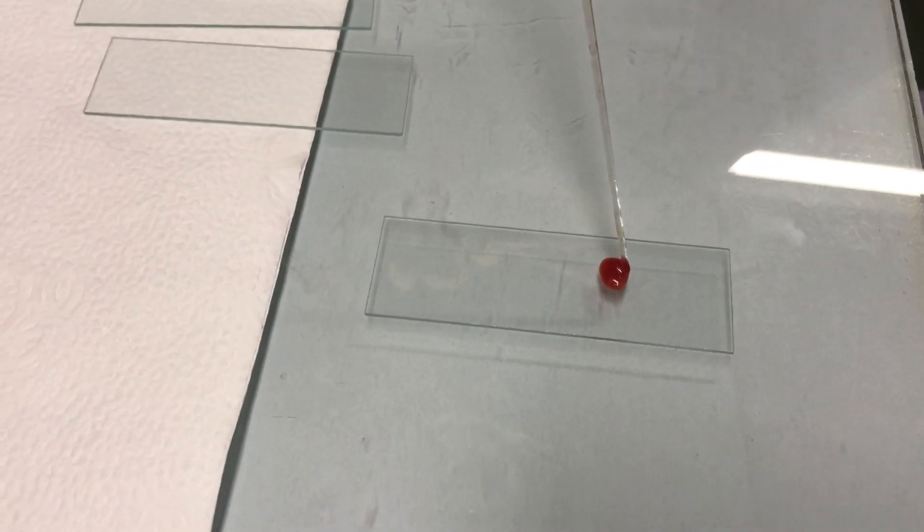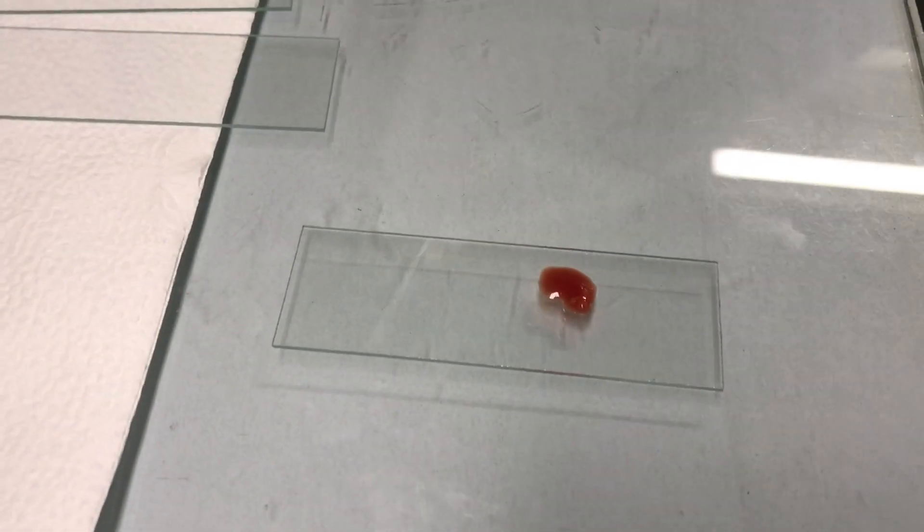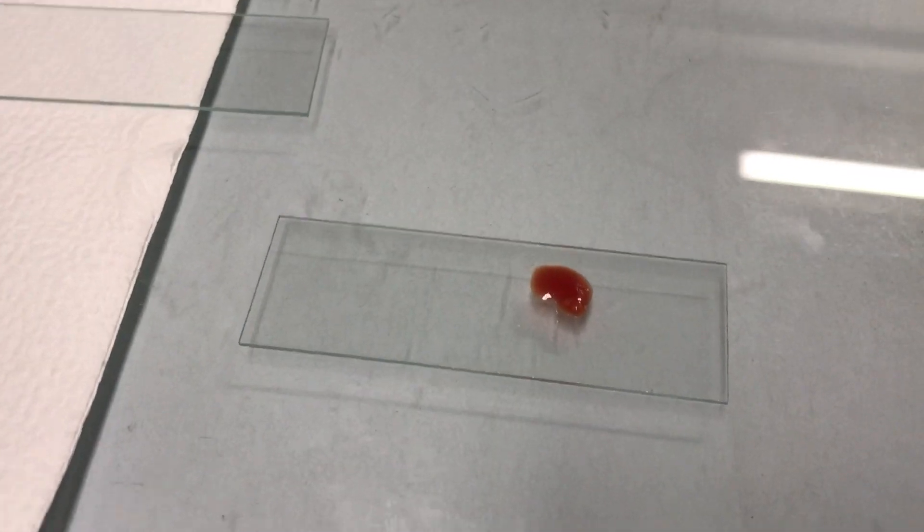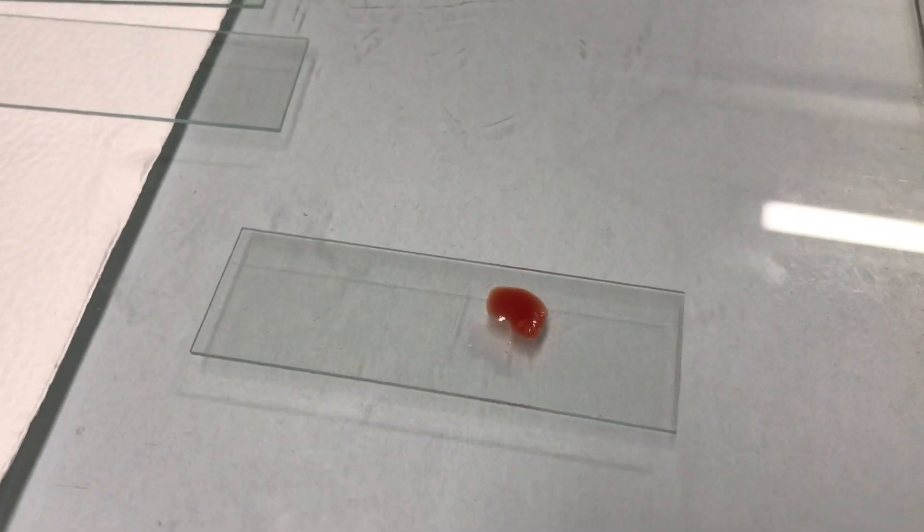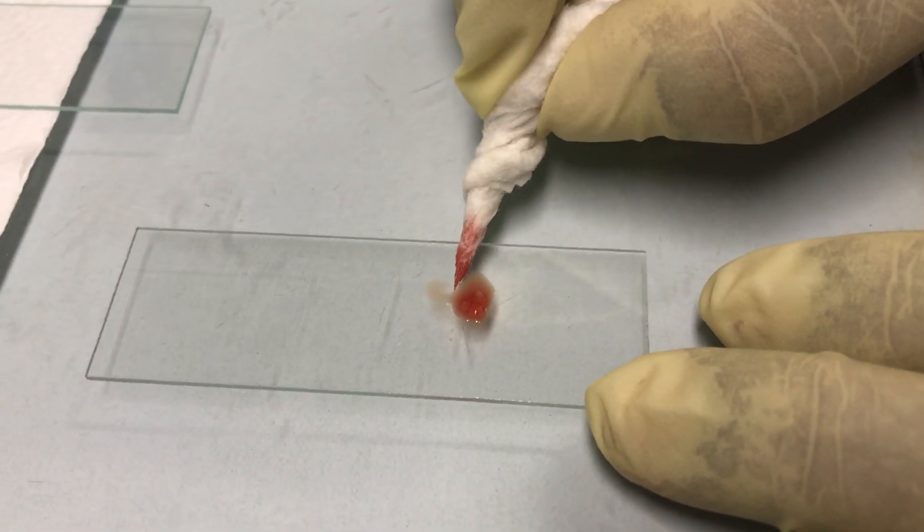Now the glass slide contains the marrow particle as well as the blood present in the bone marrow. Now we have to remove the blood by using water-soaked cotton.